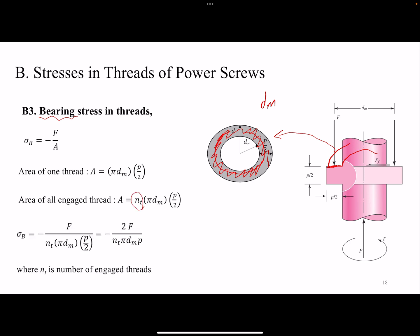So, plugging all the values here, I get my last equation. This is the stresses on the thread, the bearing stresses on the thread itself. I got three stresses for the thread, and two stresses for the body.